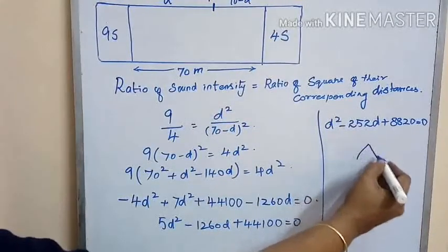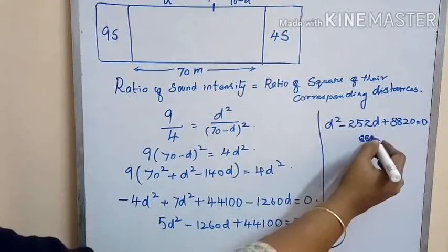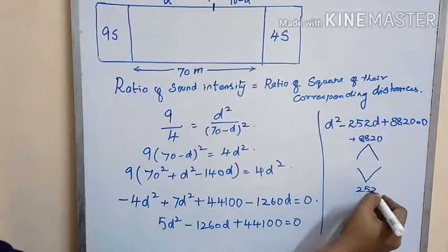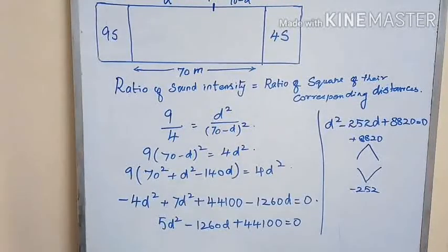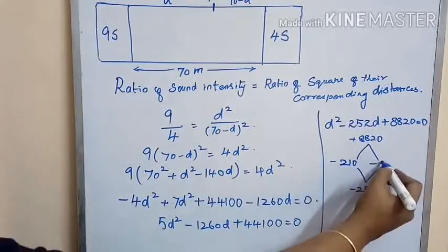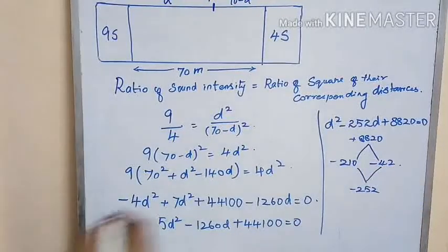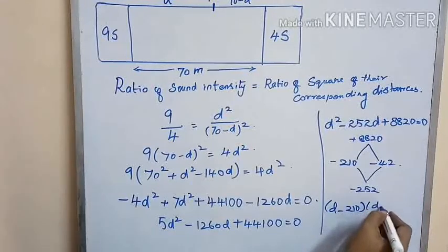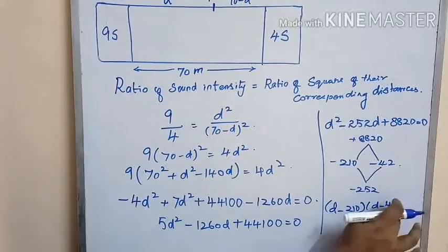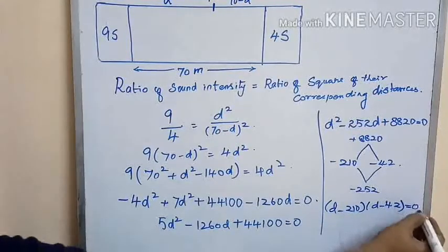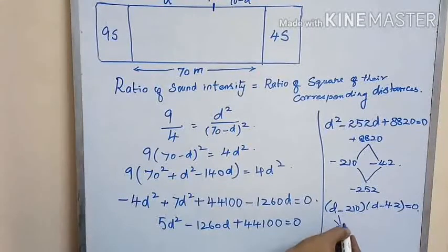Let us solve this quadratic equation using splitting the middle term. The middle term product is 8820 and sum is minus 252. So the roots are minus 210 and minus 42, meaning (d minus 210) and (d minus 42) are the factors. So we get the values of d as 210 and 42.